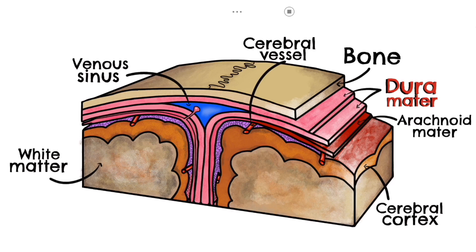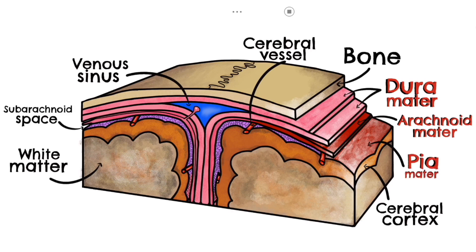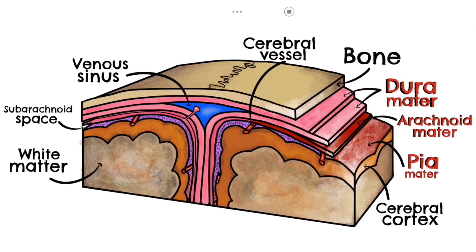The arachnoid mater is the middle layer and the first layer of the leptomeninges. The inner pia mater is the second layer of the leptomeninges, which is closely related to the cerebral cortex. Between the arachnoid mater and the pia mater is the subarachnoid space, which is filled with CSF.